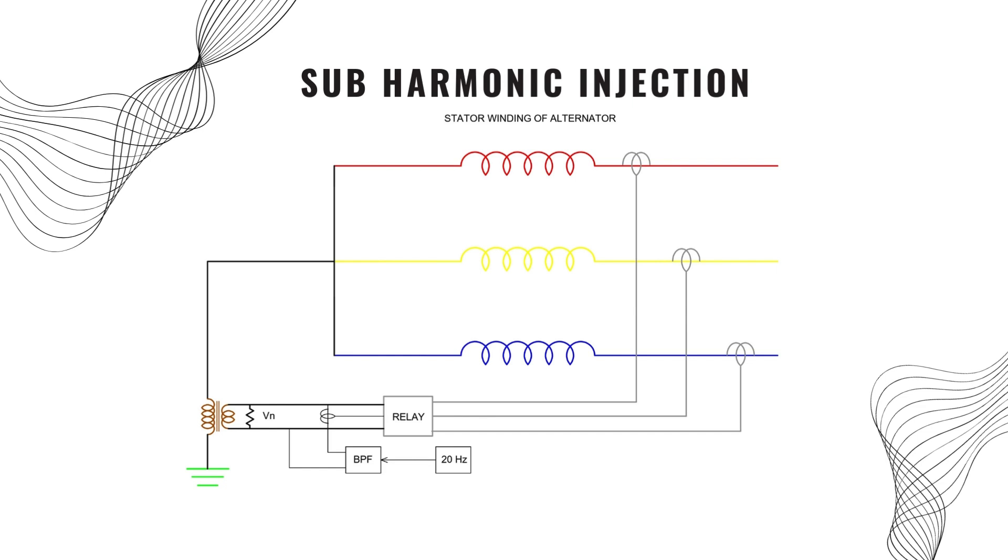Now, the relay knows the value of voltage and current and from these values, it can be easily calculated the value of insulation impedance.